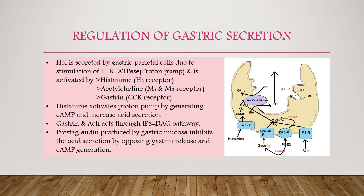Gastrin and acetylcholine bind to cholecystokinin and muscarinic receptors respectively, and act through the phospholipase C / IP3-DAG pathway, which causes the release of intracellular calcium ions that stimulate the proton pump to release hydrochloric acid. Prostaglandin has an inhibitory action: it is produced by the gastric mucosa, binds to the prostaglandin receptor, and inhibits gastrin release as well as cAMP generation.